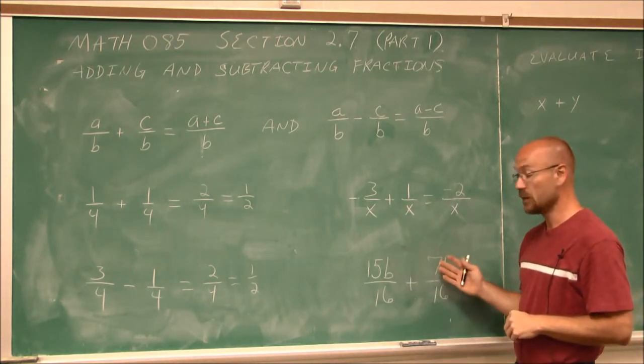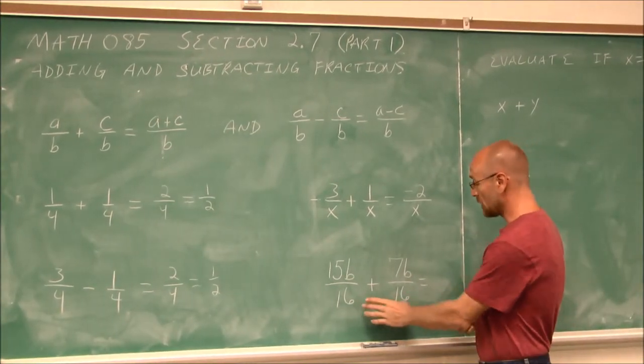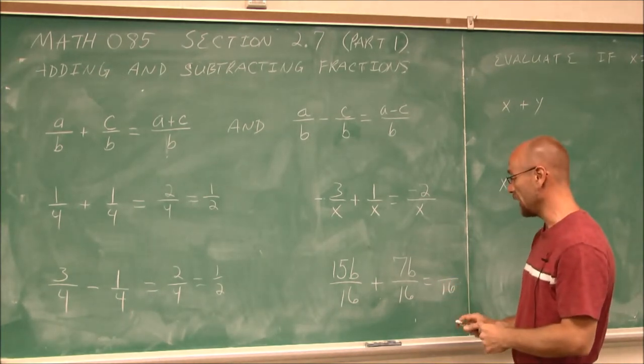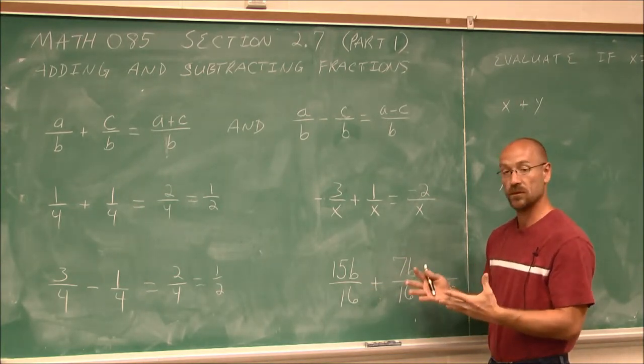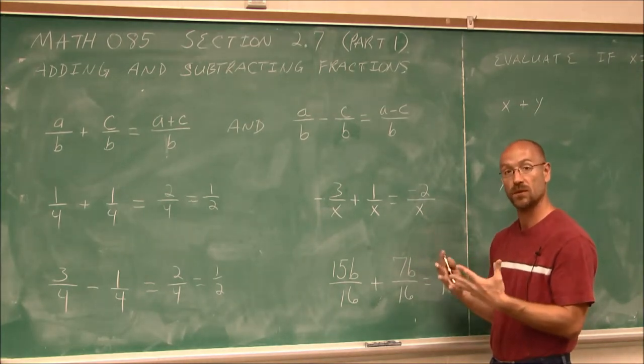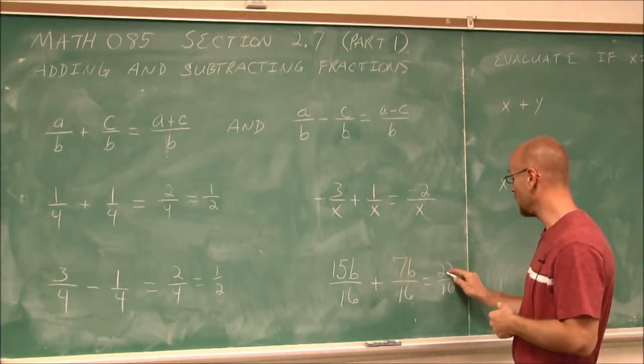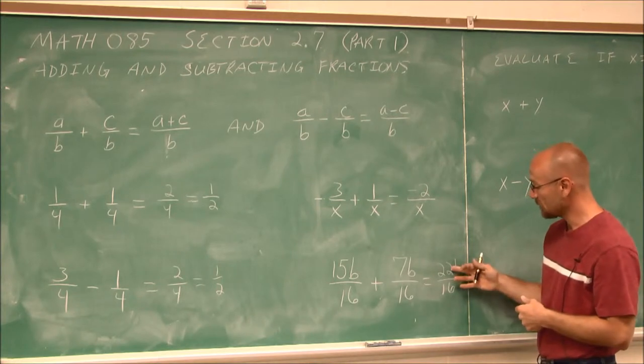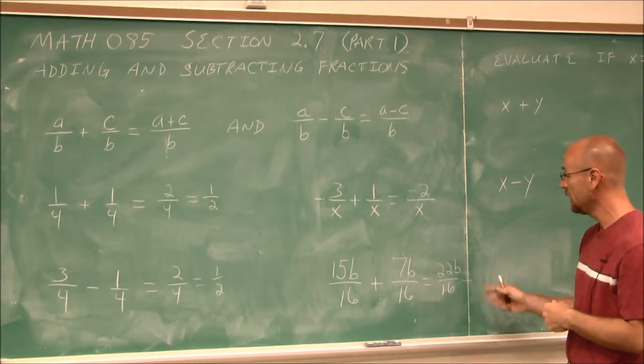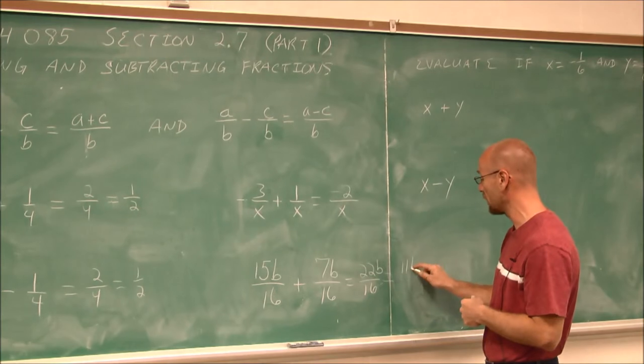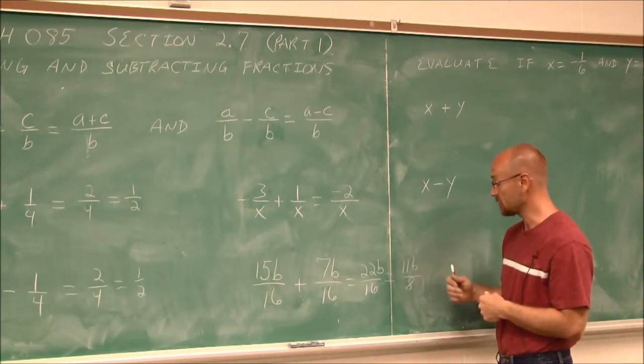Now, what if the variable is in the numerator? Well, this is where we review what we covered before, and that's like terms. Since our denominators are the same, that's not going to change. It's going to be 16. And I have 15 b's, and I'm going to add 7 b's. Well, think of those b's as apples. If I have 15 apples and I add 7 apples, well, those are like fruit. So I can combine them, 15 and 7 is going to give me 22 of these b's. And now I look and say, well, 22 and 16 have a common factor. They're both even numbers, so I can divide out a 2. So I'm going to take it a little bit further and divide 2 out of this, which leaves me with 11 b's. And 2 out of that is 8. So I have 11 b over 8 as my simplified answer.